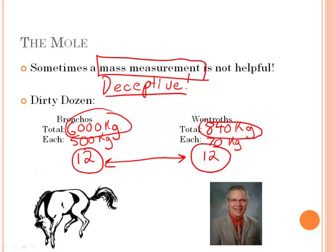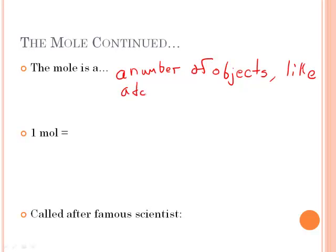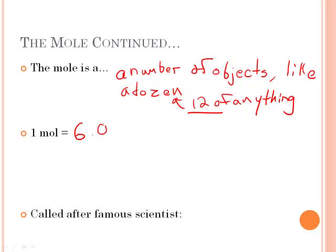In chemistry, we're all about measuring quantity, and the thing we use to measure quantity is the mole. The mole is basically a number of objects — just like a dozen could be 12 of anything, a mole could be a mole of anything. It just so happens that the mole is a very, very large number, different from 12 — a lot more than 12. It is 6.022 times 10 to the 23rd.